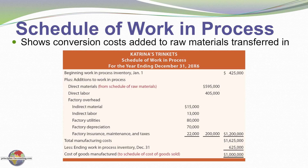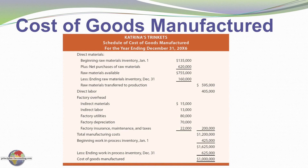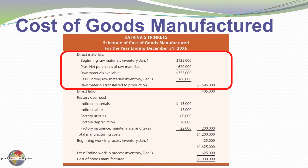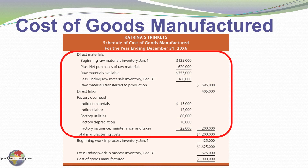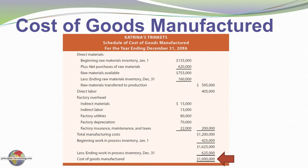Sometimes companies will combine these two schedules into a combined schedule of cost of goods manufactured. Here you can see a repeat of the schedule of raw materials: beginning raw materials plus purchases minus ending raw materials gives us the raw materials transferred into production — $595,000. Adding to that the beginning work in process and subtracting the ending work in process gives us the $1,000,000 cost of goods manufactured. This schedule is merely a combining of the previous two schedules.